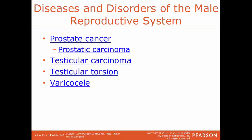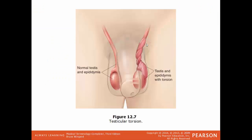Prostate cancer, also known as prostatic carcinoma, is cancer of the prostate gland. Testicular carcinoma is cancer within the testicles. Testicular torsion is the twisting of the spermatic cord — the structure supporting the testes within the scrotum — cutting off blood supply to the testicles. Varicocele is a collection of varicose veins found in the spermatic cord, an enlargement of the veins within the scrotum. In testicular torsion, the more the tube twists, the more restriction of blood flow to the testes and surrounding tissues.